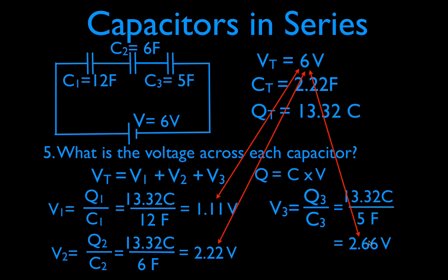That's all five things. On the first slide, we got the total voltage, the total or equivalent capacitance, and the total charge. Then we found the charge on each capacitor, then the voltage across each capacitor, and got it all figured out. Follow those steps, write everything down, think about your thinking. I hope you found that video helpful — give me a thumbs up or a comment in the comment section below. Thank you very much for watching. We'll see you in the next video.